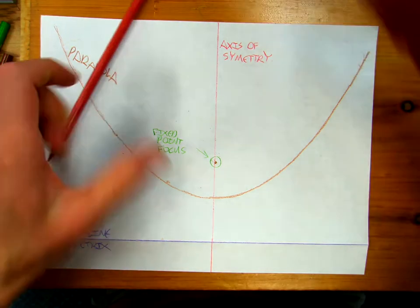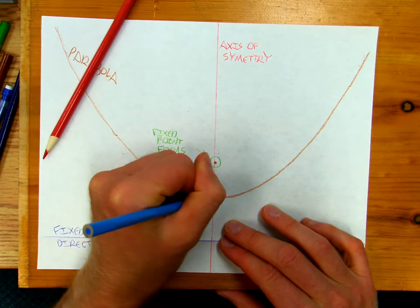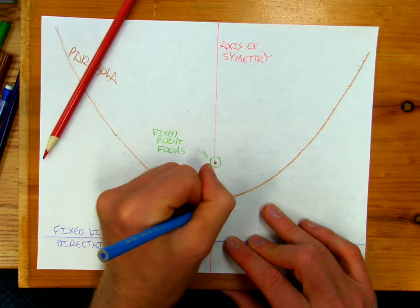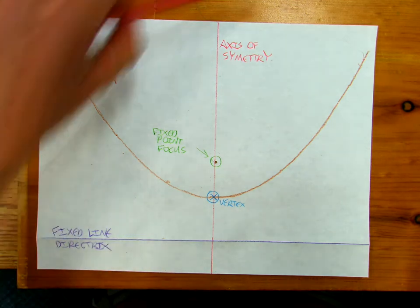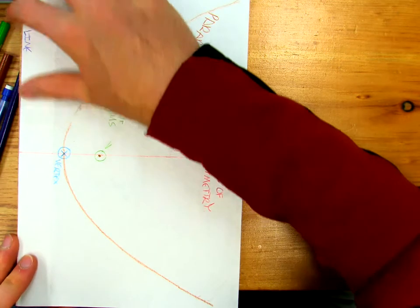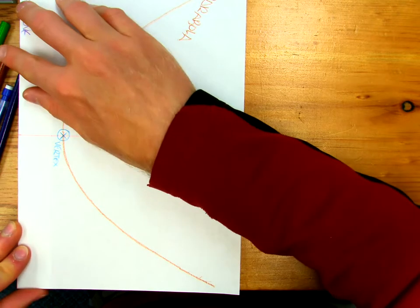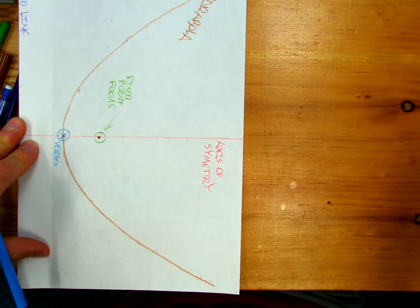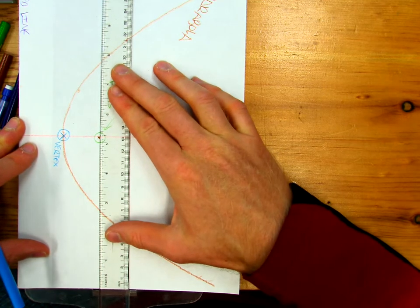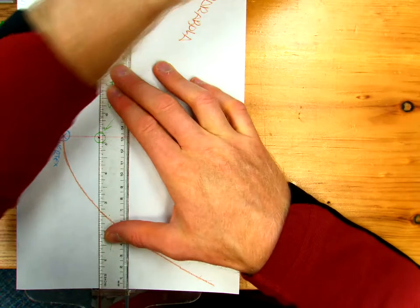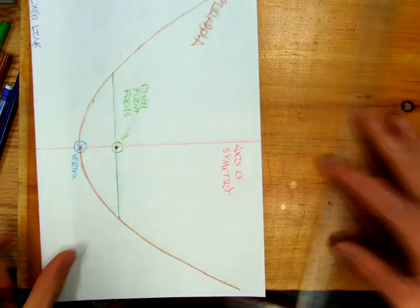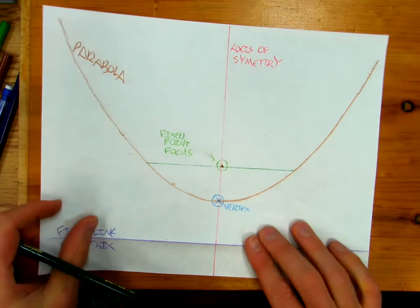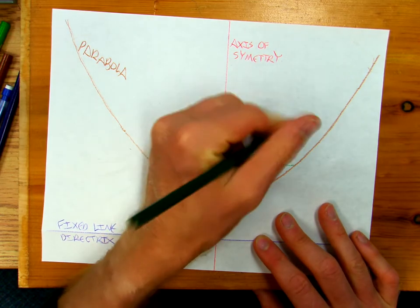Then we've also got this point right here. That's going to be our vertex. And then we're going to continue. I'm going to make another line here. I'm going to line this up like this to get a square. I'm going to make another line here. I'm going to call that my latus rectum.